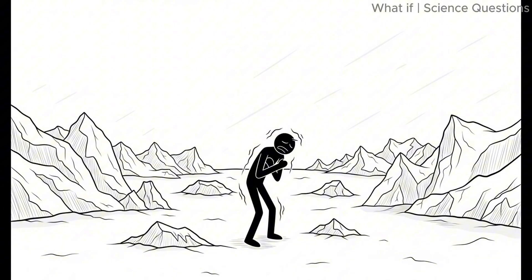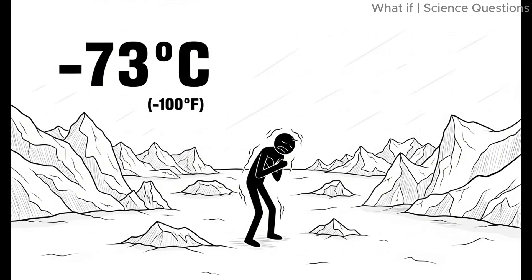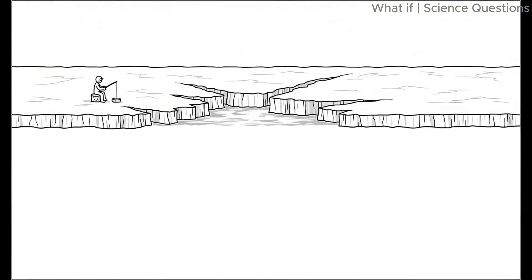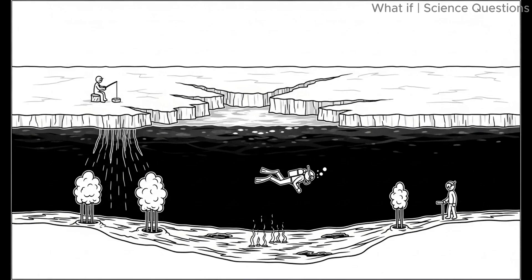The first year. By the end of one year without the sun, Earth's surface has frozen solid. The average global temperature is now about minus 73 degrees Celsius, minus 100 degrees Fahrenheit. The oceans are covered in thick ice sheets. Though deep below, liquid water still exists, heated by geothermal energy.